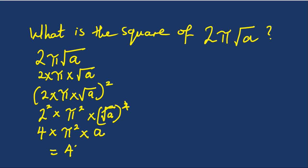So the final answer here will be 4π²a. This is how to find the square of 2π times the square root of a. I want you to attend this class again so you can have an in-depth understanding. Thank you and have a lovely time.